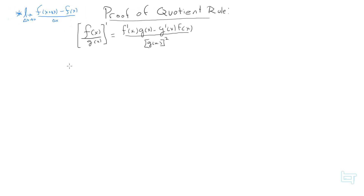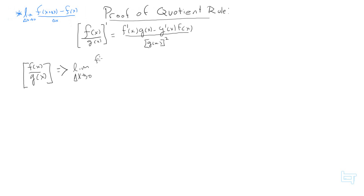So how are we going to prove this? Well, we're going to start using the definition of a derivative. Our function is f of x over g of x. So by using the definition of a derivative, we can simply write exactly that. So I'll write f of x plus delta x — this is the definition of a derivative that I'm referring to.